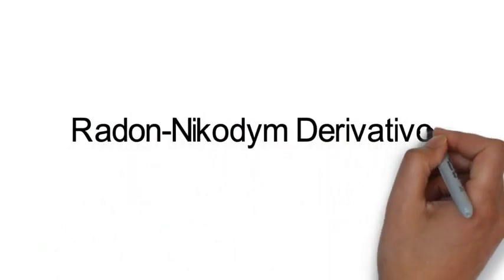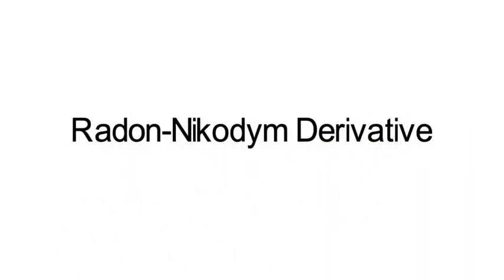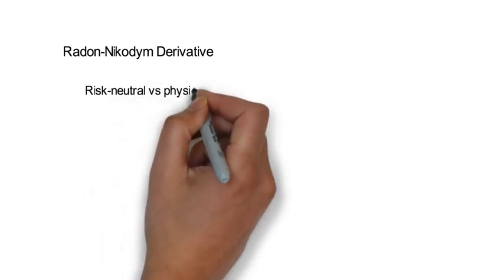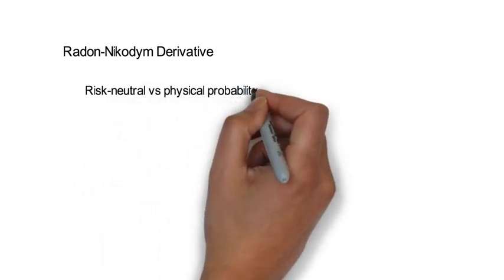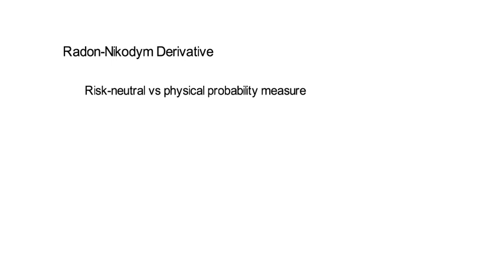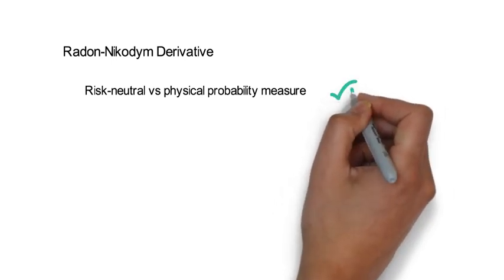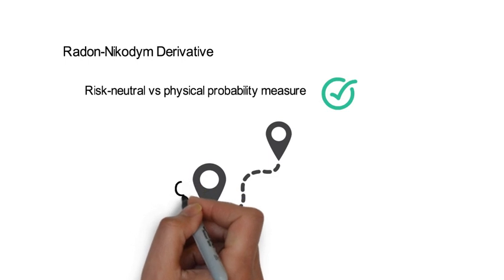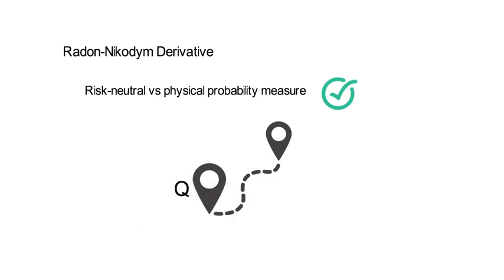This video talks about the Radon-Nikodym derivative. The instruction assumes that you already understand the concept of risk-neutral versus physical probability measure. Simplistically speaking, the Radon-Nikodym derivative measures the distance between the risk-neutral pricing measure Q and the empirical probability measure P.